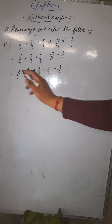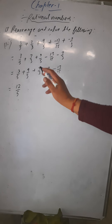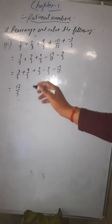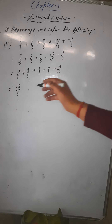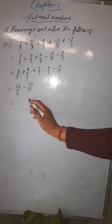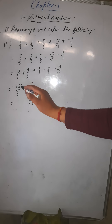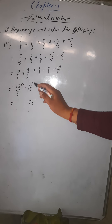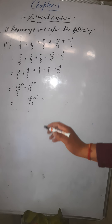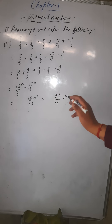Both fractions with denominator 5: 9 + 3 = 12, so that gives 12/5. For 7/3 minus 7/3: the numerator is 7 minus 7 = 0, so this becomes 0. Now take the LCM of 15 and 5, which is 15. Divide 15 by 5 — 3 times — multiply numerator by 3: 12 times 3 is 36. Minus 13 stays. So the answer is 36 minus 13 over 15, which is 23/15.